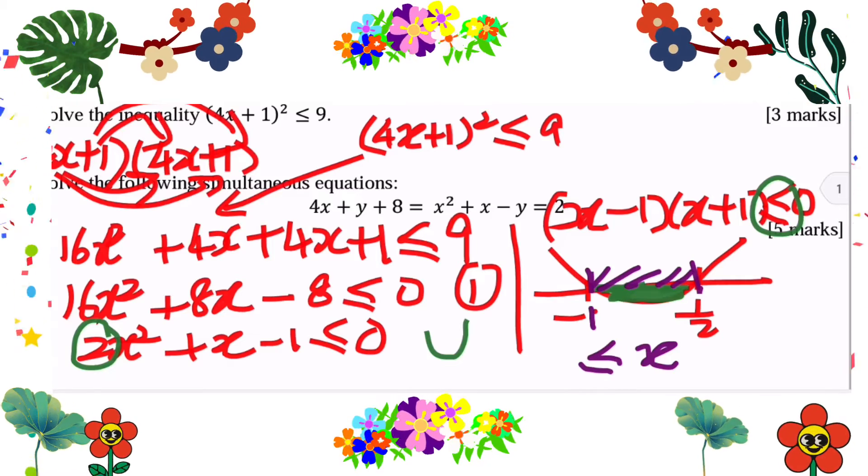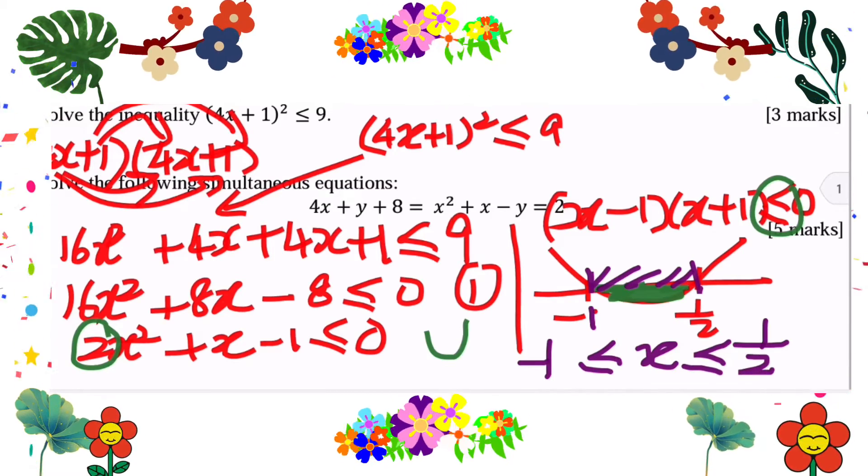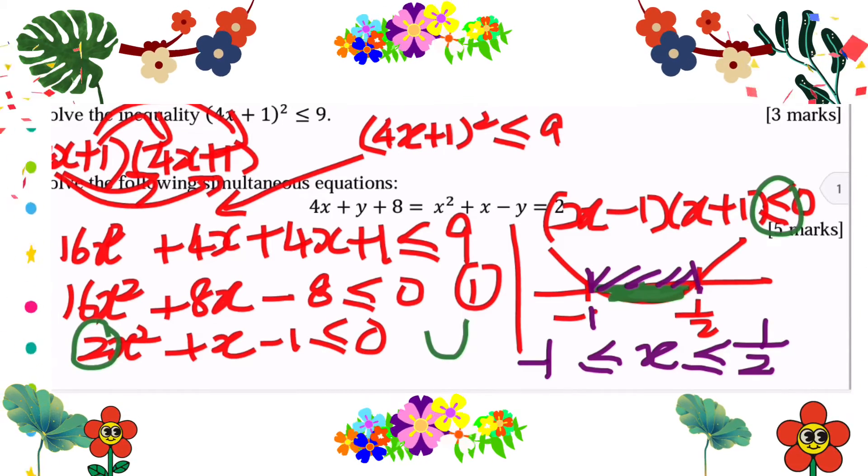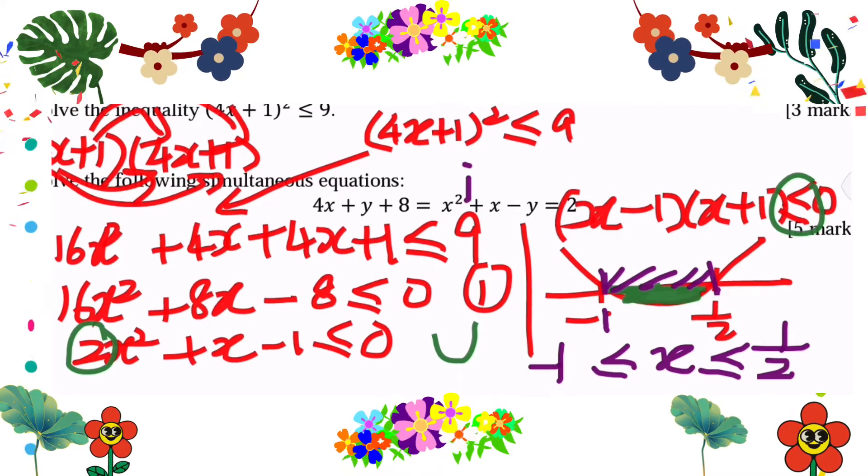So hence we must write the answer like this: -1 ≤ x ≤ 1/2. That is the range of values of the quadratic function.